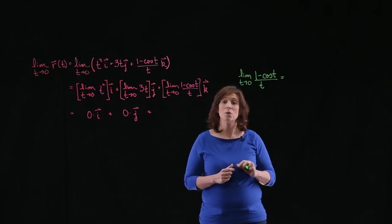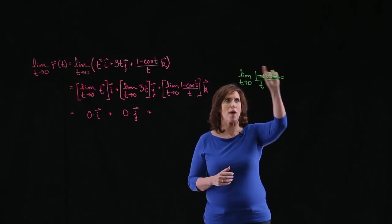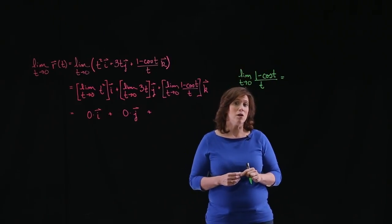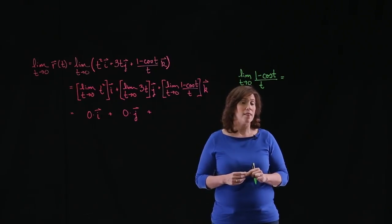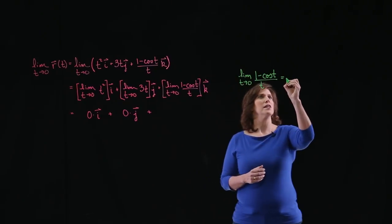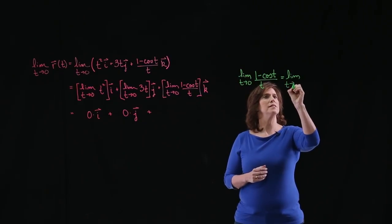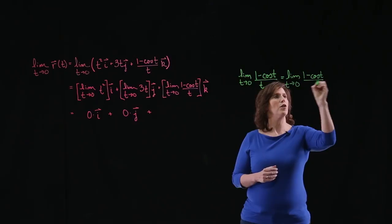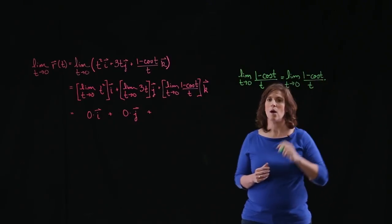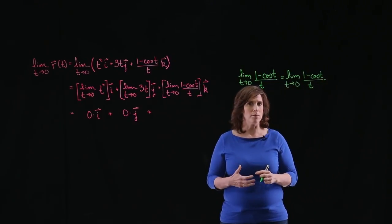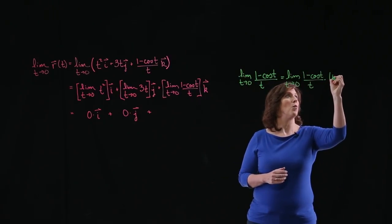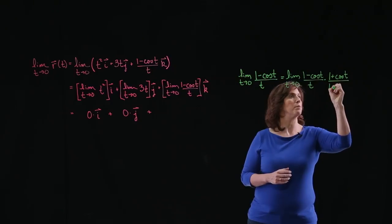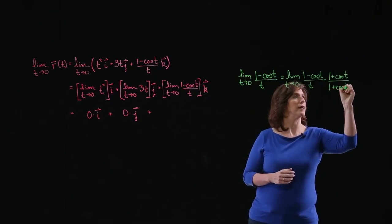Now again, this is an indeterminate form. So I'm going to have to find a way of rewriting that expression. The way I'm going to do that is multiply my expression by 1. That way, nothing has changed. So the limit as t approaches 0 of 1 minus cosine t all over t times 1. Now what form do I want 1 to take? I'm going to use 1 plus cosine of t all over 1 plus cosine of t.